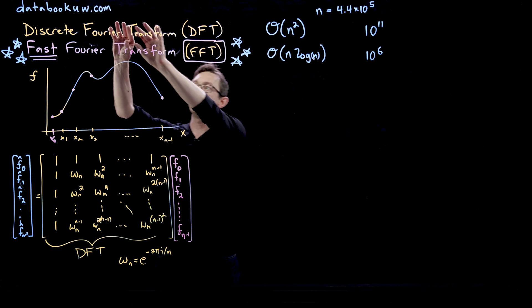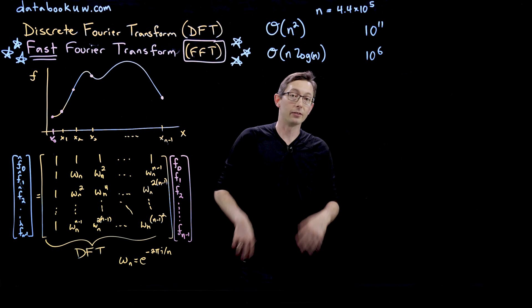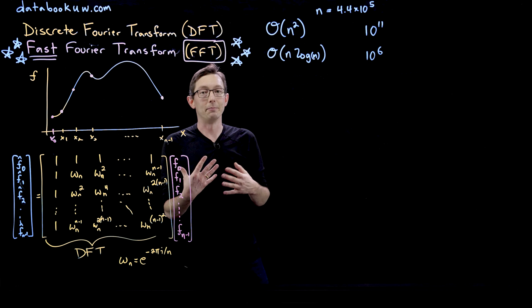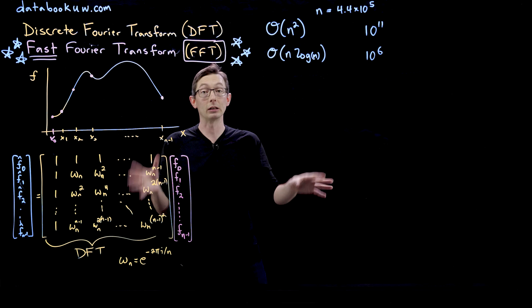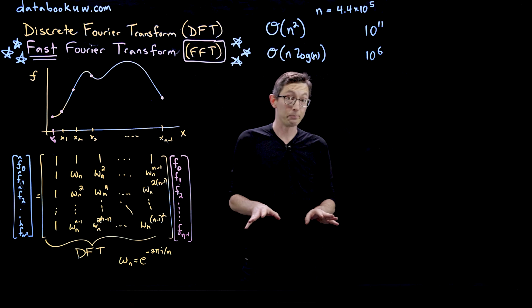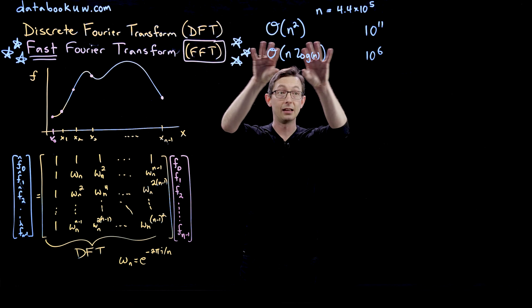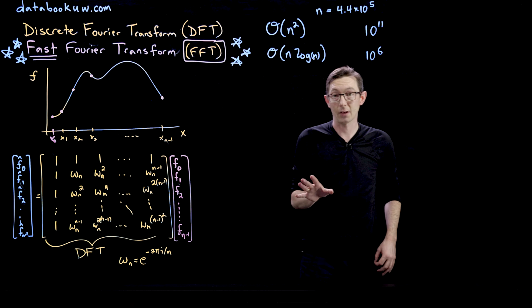If we were stuck doing the discrete Fourier transform, we wouldn't have the same kind of image and audio compression that we have today. We wouldn't be able to send pictures seamlessly across continents and have streaming television. All of this would be much, much harder because this scaling here is not that favorable. But this scaling, order n log n, is really, really good scaling.